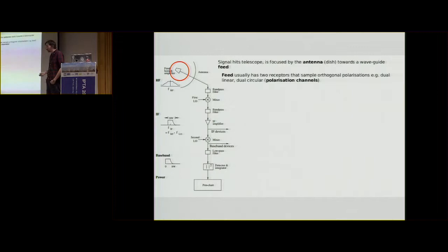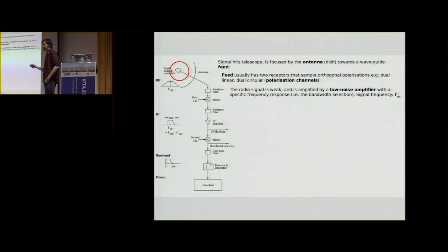It also allows us to sample more information for the pulsar, which is important, as you'll see later. Because the radio signal is very weak, even when it's being gathered by this big dish, we employ a low noise amplifier with a specific frequency response, which allows us to select a frequency range that we wish to use for our observation.